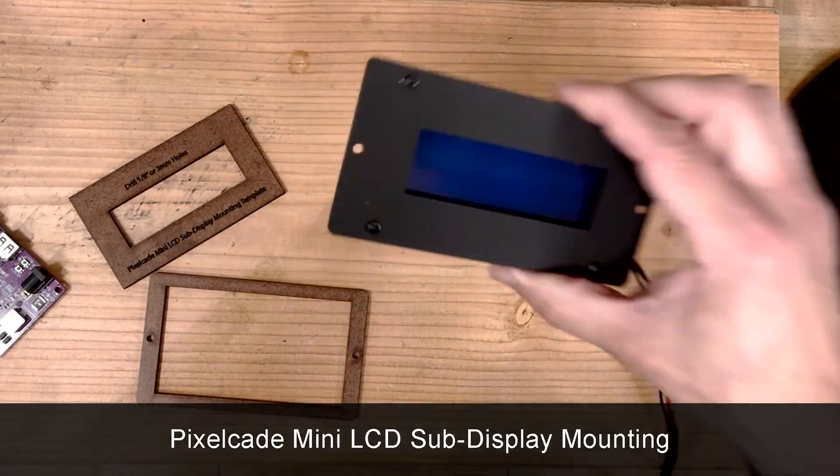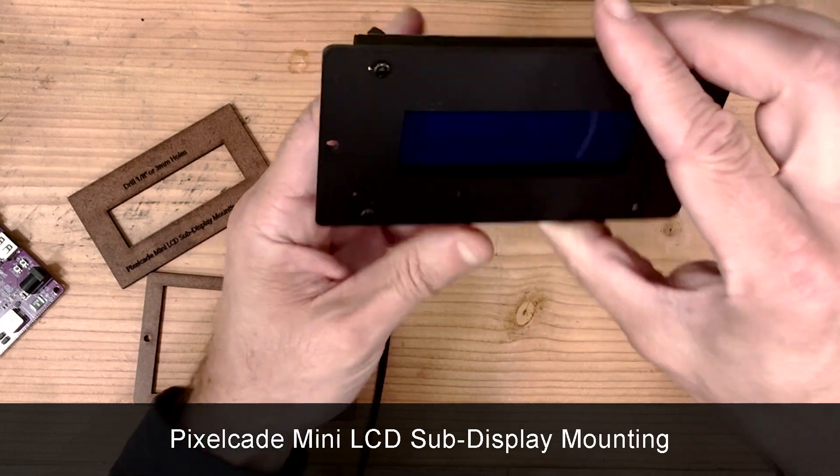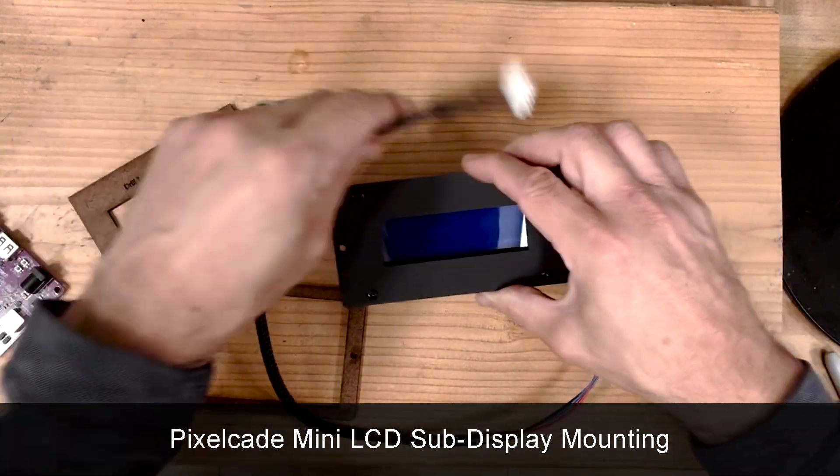So here's what the display looks like. This is a panel mount, so it's going to basically mount flush, and let me show you now how to mount it.